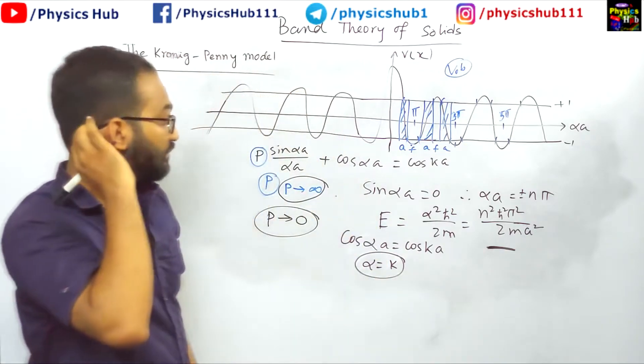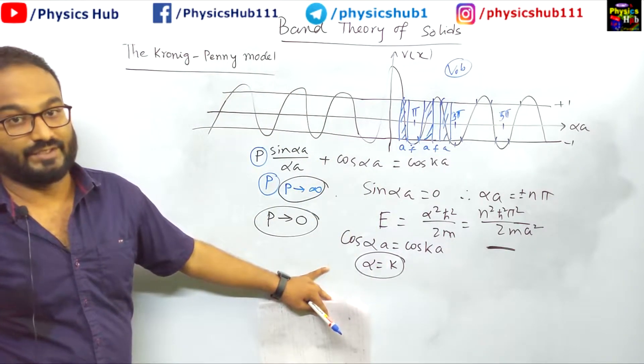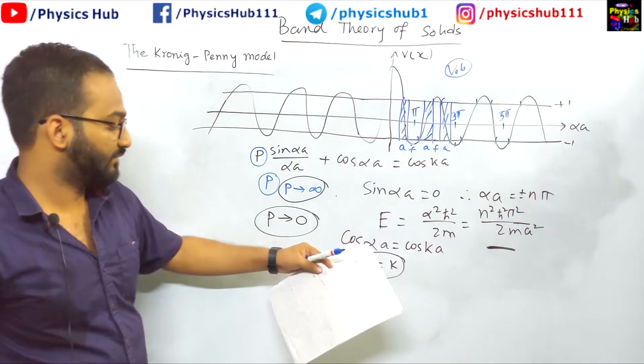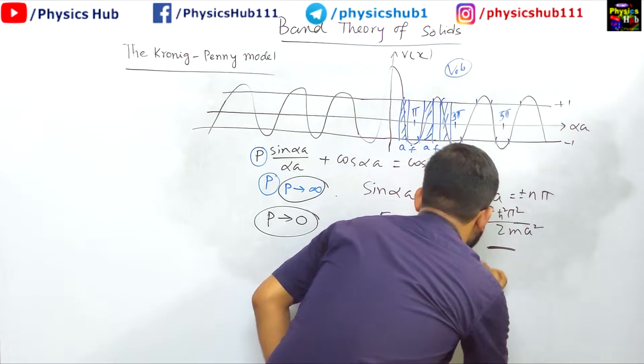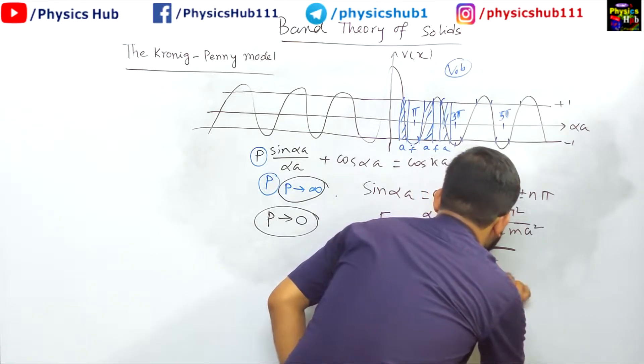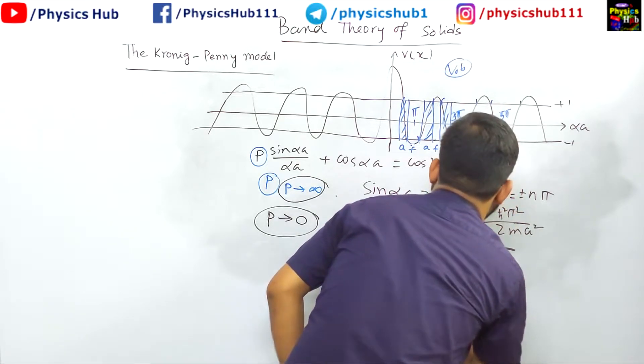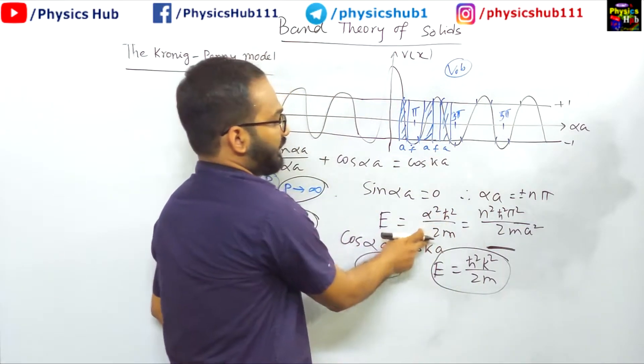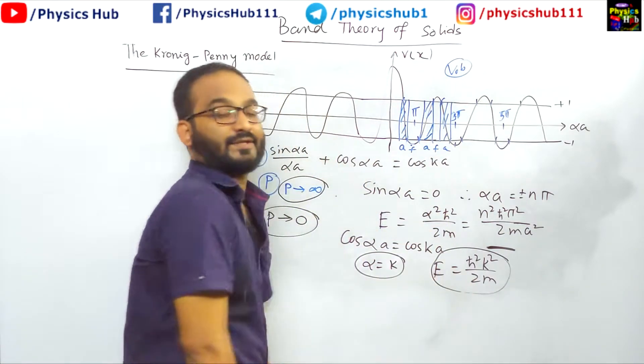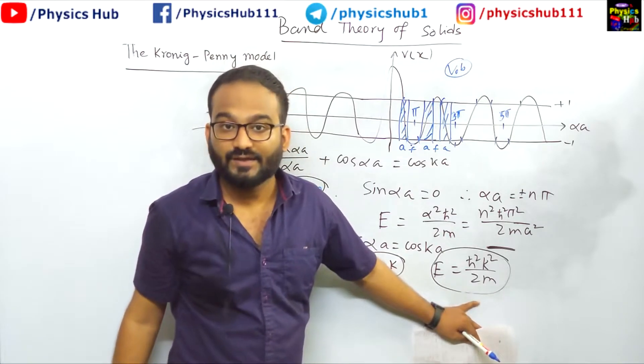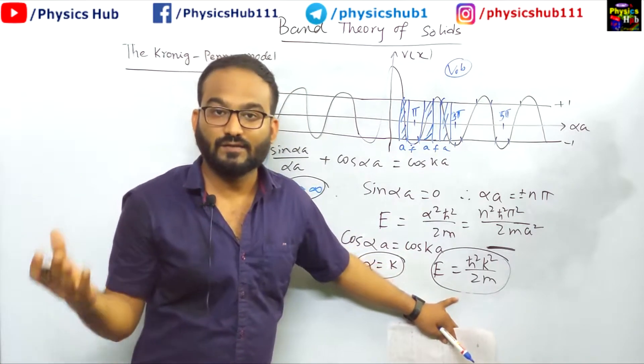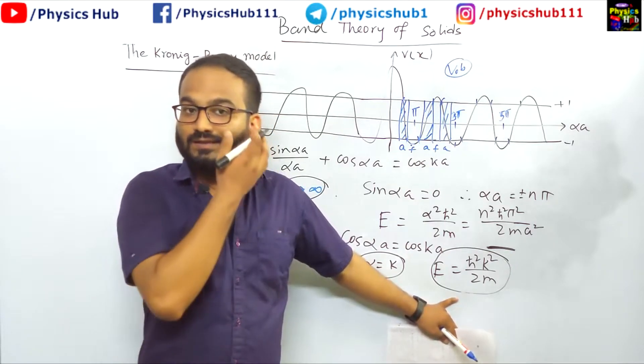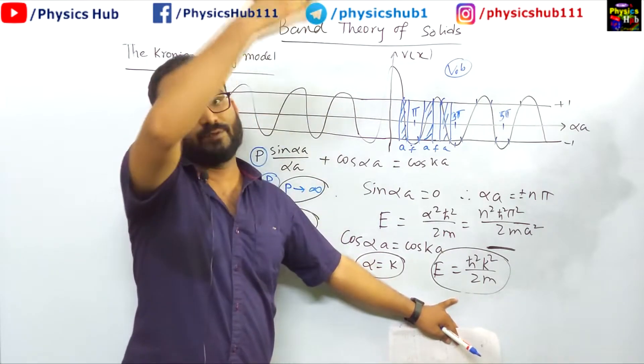If this thing becomes equal, what you get? What does the energy expression become? Your energy expression becomes E equals ℏ²k²/2m. Simple: ℏ²k²/2m. What is this expression? This is the continuum case. This is the energy expression of a classical particle - particle in case of classical particle. You know the energy is continuous, quasi-continuous you can say.